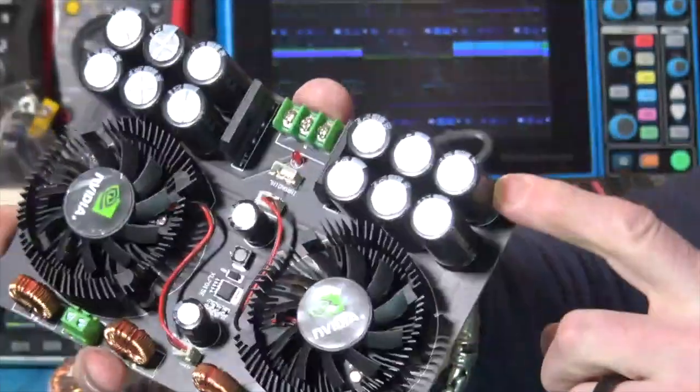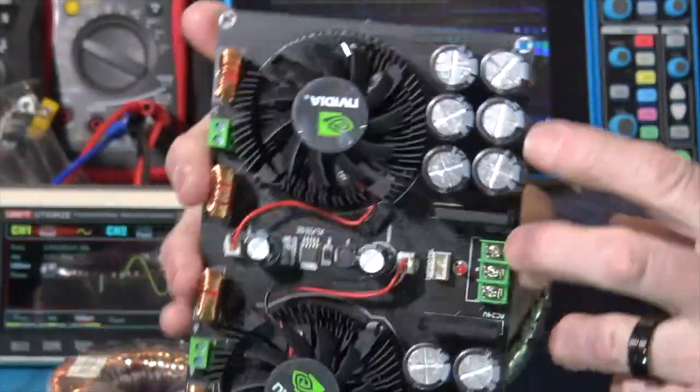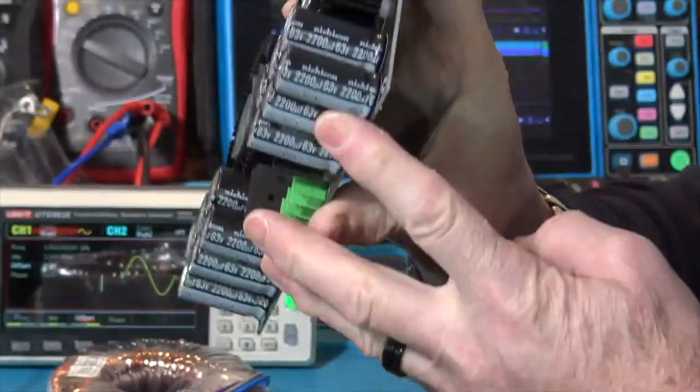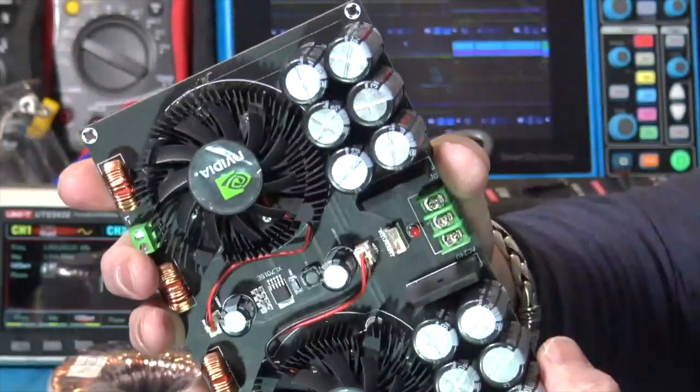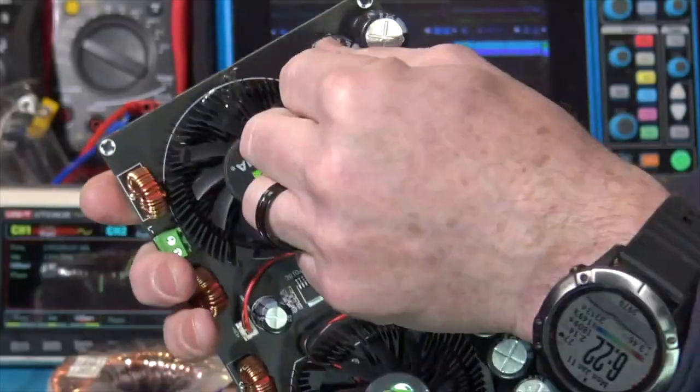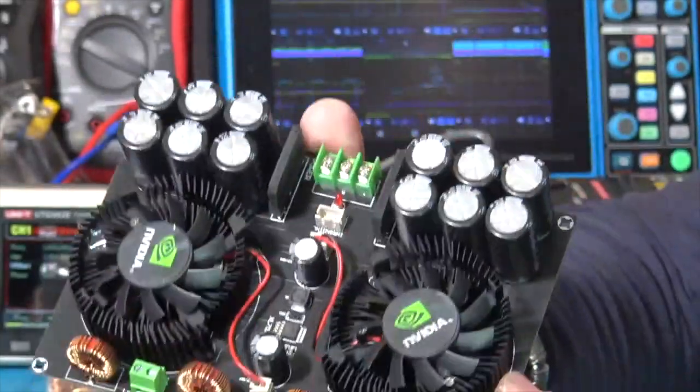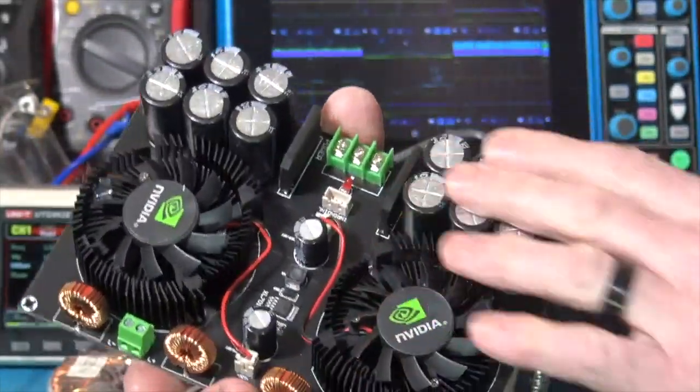And these capacitors, by the way, these are 2200 microfarad, 63-volt caps. So, yeah, there's 6600 microfarad per rail, per module.